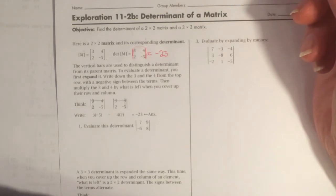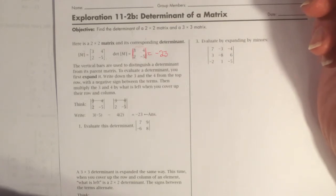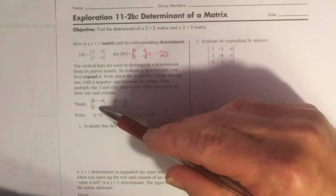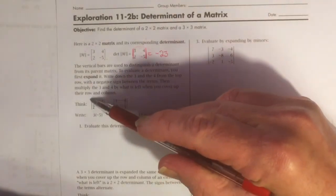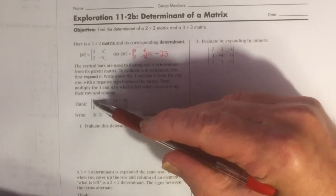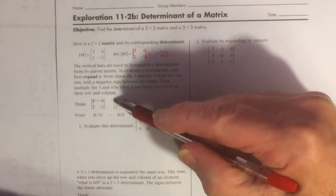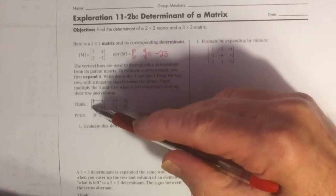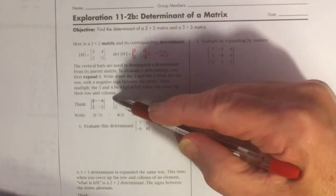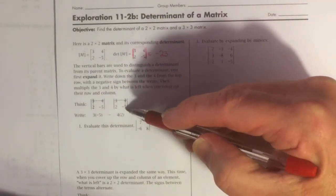The book doesn't actually do it that way. It uses the opportunity of a two-by-two matrix to set you up, to teach you how to find the determinant of larger matrices. Here you can see that they've used dotted lines to cross out a column and a row here, and a row and a column over here.